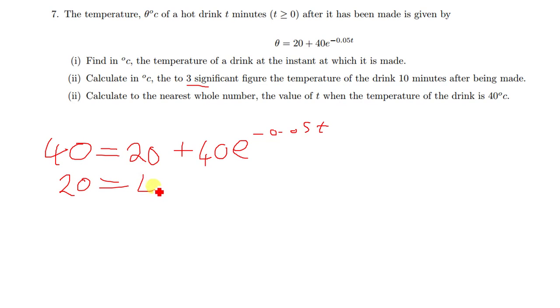Then I'll divide both sides by 40. Divide this side by 40, then your e^(-0.05t) will just be equal to 1/2.